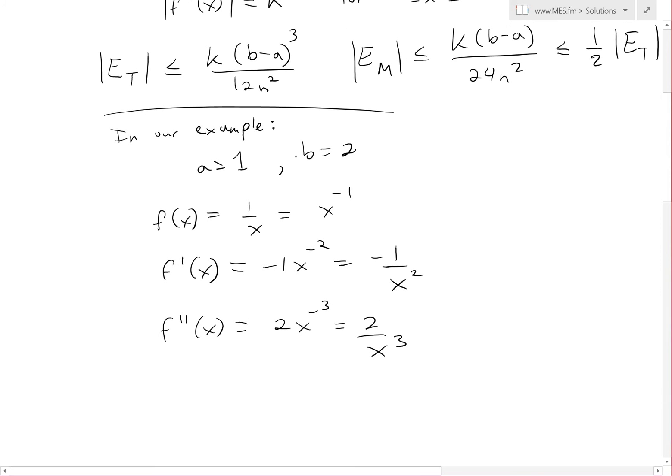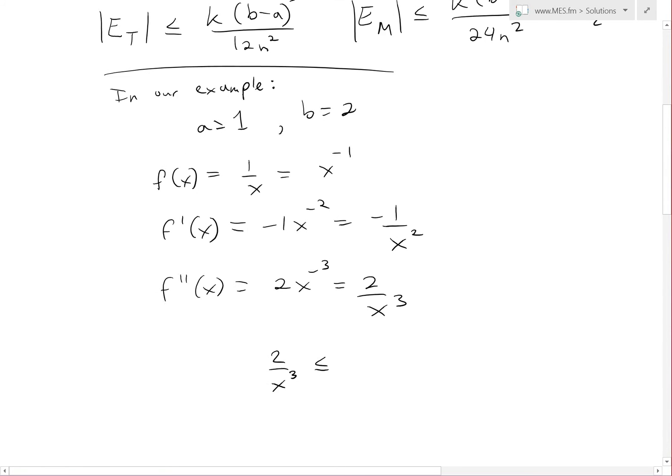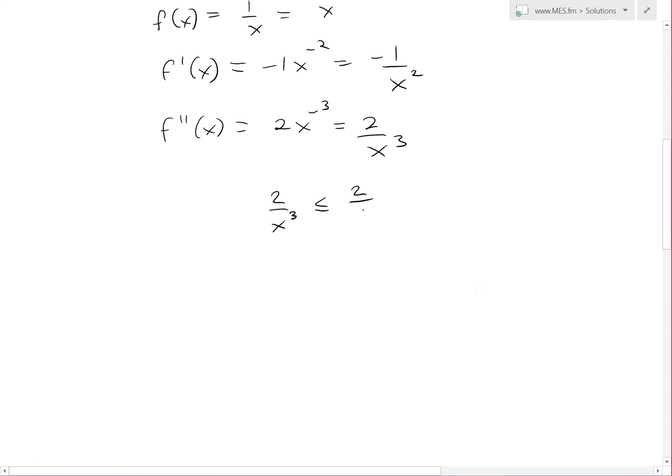When we look at the upper and lower bounds, 2/x³ at x=1 equals 2, and at x=2 equals 2/8 or 1/4. So 2 is the largest value inside this interval. Thus we can choose k equals 2 because that's the largest second derivative value in this interval.